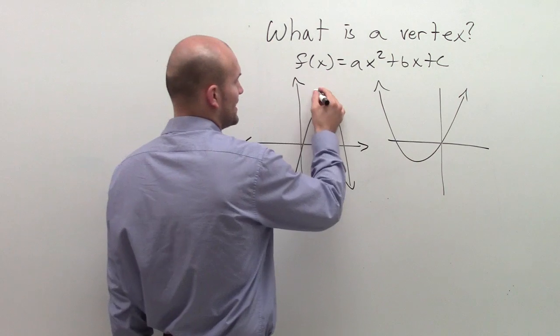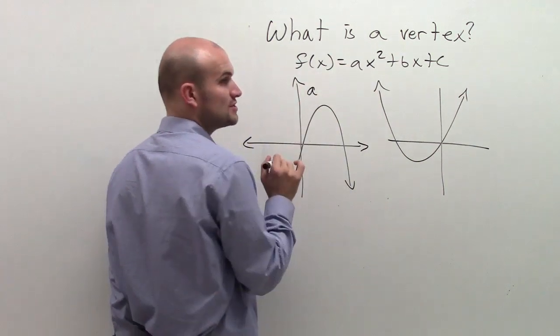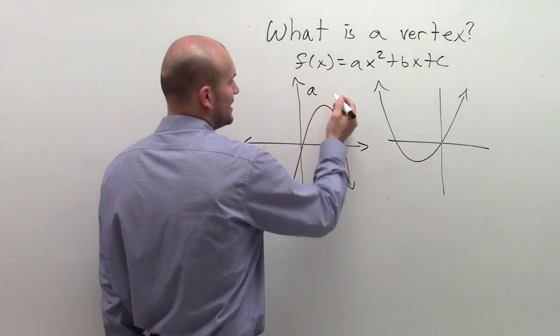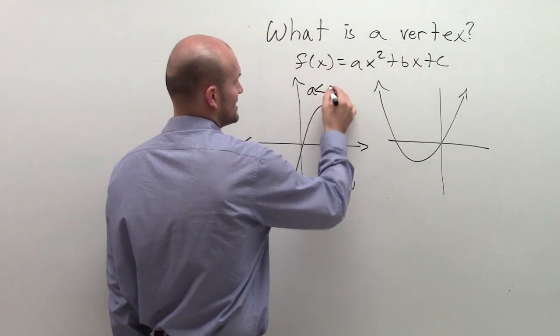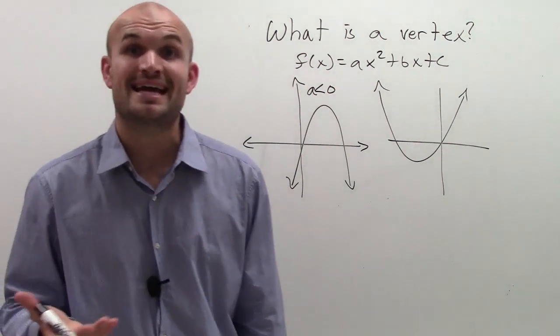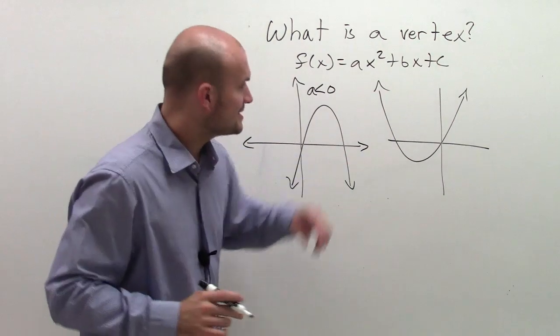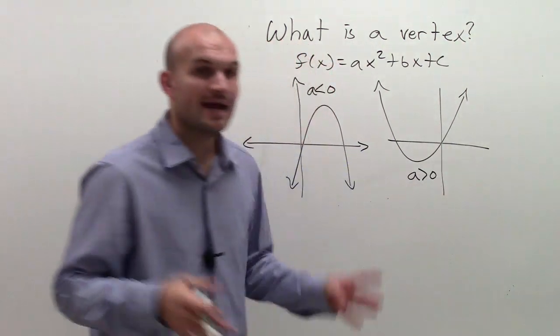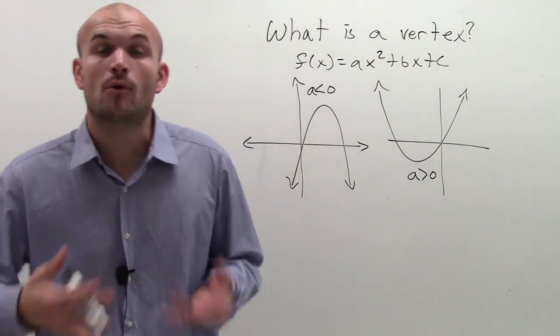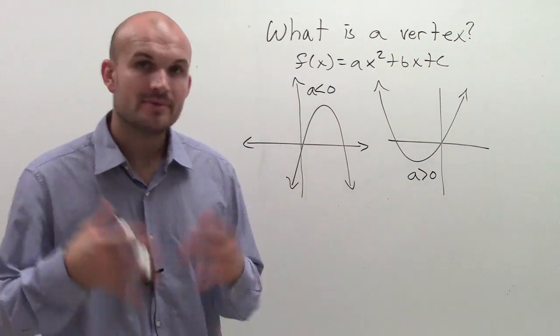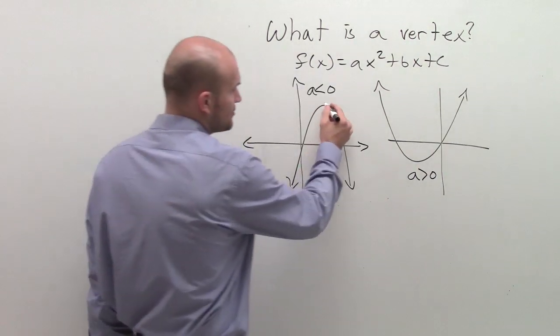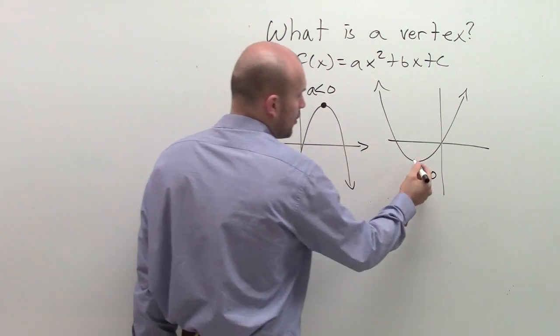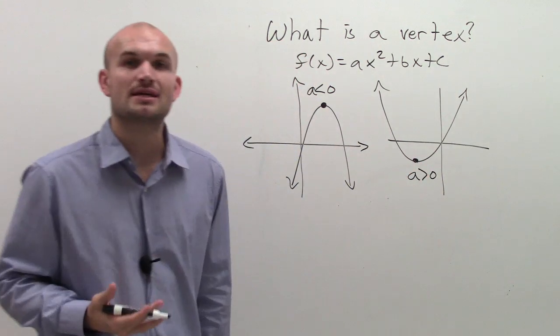Here is when a, our coefficient of our x squared, of our squaring term, is going to be less than 0, meaning it's going to be a negative number. It's going to open up when a is greater than 0. And that's really important for you to identify what type of vertex you're dealing with, because the vertex is going to be the maximum or the minimum point of your parabola.